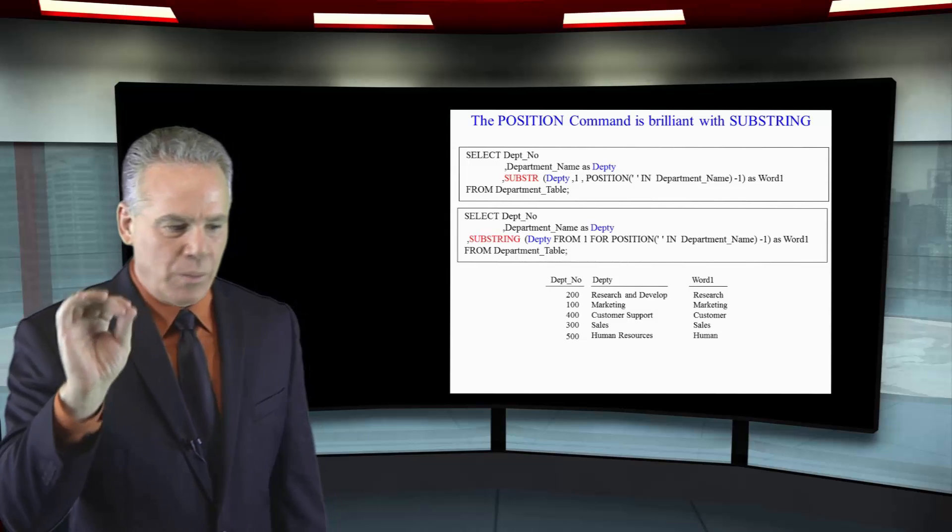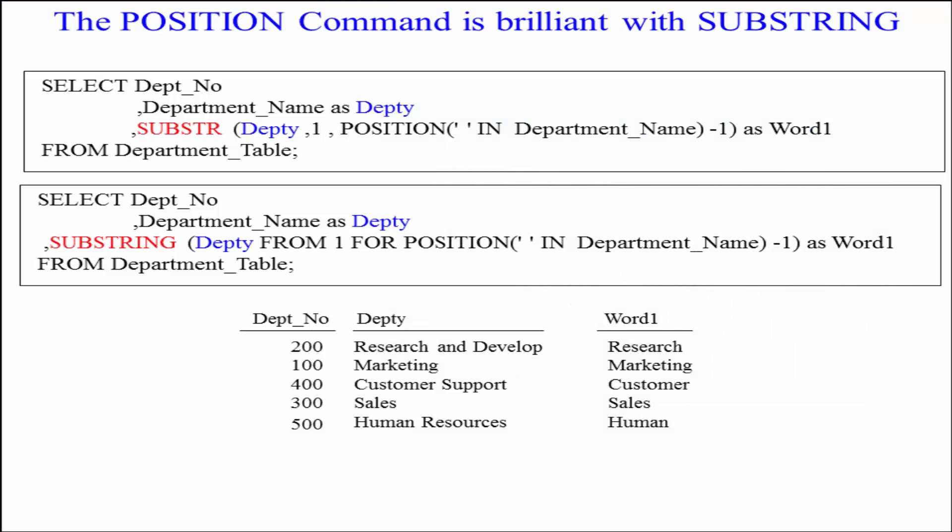Looking at the end report, we're going to get department number and then an alias called 'deputy' for the department name. Notice that some department names have multiple words, such as 'Research and Develop.' We only want the first word from each department name in our final column. So we'll select department number, department name as deputy, and then SUBSTRING of deputy.